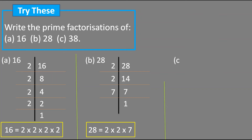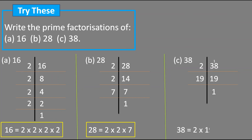Next number is 38. Since 38 is even, we start with 2. 2 times 1 is 2, subtract from 3 giving remainder 1, write it in front of 8 to get 18. 2 times 9 is 18, giving 19. Since 19 is itself a prime number, we divide 19 by 19 — 19 times 1 is 19. So the prime factorization of 38 is 2 into 19.